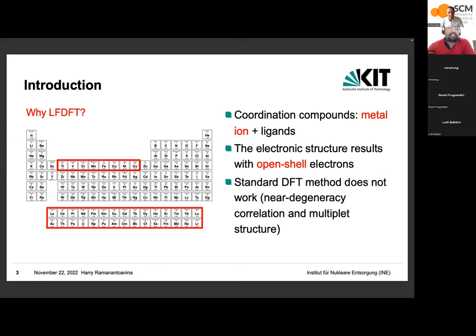Why do we need ligand field DFT? Ligand field DFT is useful for metal coordination compounds — always a metal ion from the transition metals or lanthanides/actinides, combined with some ligands. These compounds are characterized by an open shell electronic structure, with open shell electrons occupying 3d orbitals in transition metals, or 4f/5f orbitals in lanthanides and actinides. Standard DFT methods do not work well with these compounds because of near-degeneracy correlation and the multi-state structure arising from the open shell configuration.